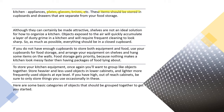In organizing kitchen equipment, these items should be stored in cupboards and drawers that are separate from your food storage. Although shelves can certainly be made attractive, they are not an ideal solution for how to organize a kitchen. Objects exposed to the air will quickly accumulate a layer of dusty grime in a kitchen and will require frequent cleaning to look sharp. So as much as possible, everything should be in a closed cupboard. If you don't have enough cupboards, use them for food storage and arrange your equipment on shelves or hang some items on the walls. Food storage gets priority because nothing makes the kitchen look messy faster than having packages of food lying about.